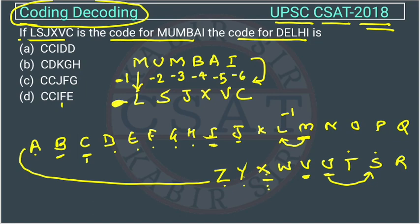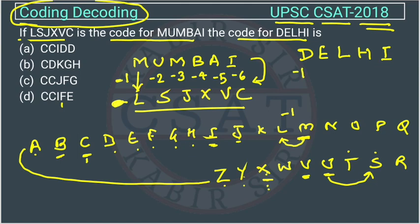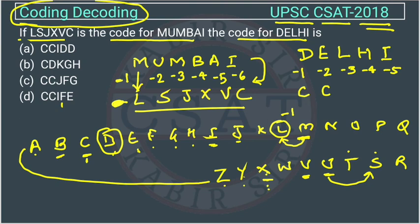This is the logic used to convert Mumbai into its code. Now we apply the same rule to convert Delhi: D-E-L-H-I. Minus 1, minus 2, minus 3, minus 4, and minus 5 respectively. D minus 1 is C. E minus 2 going backward — first, second — is C again. L minus 3 — first, second, third — gives I.